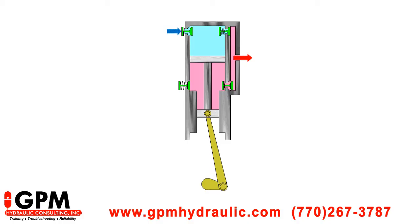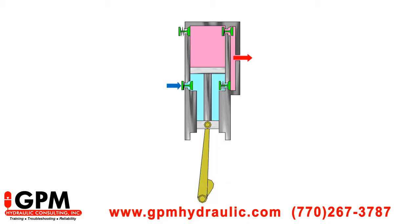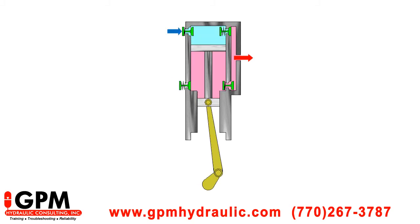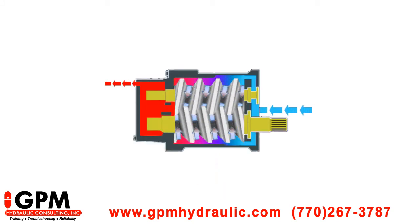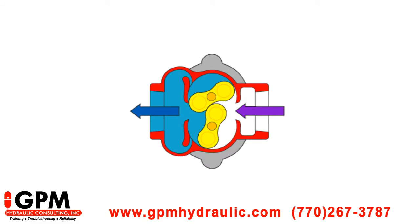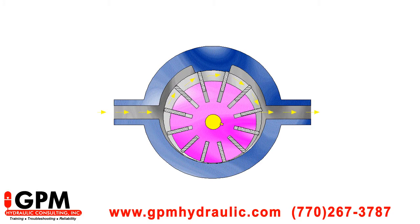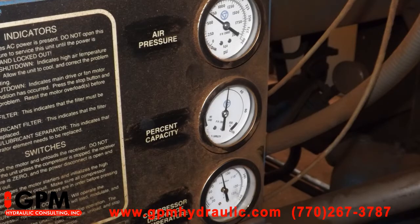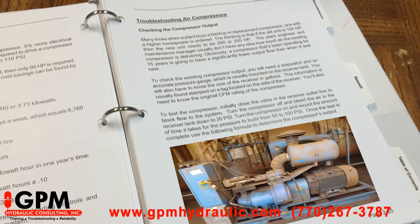Students are instructed in the five most common types of compressors used in industrial plants: piston, rotary screw, centrifugal, rotary lobe, and vane type compressors. In this workshop, we show how one simple adjustment can drastically reduce energy costs while maximizing the life of the compressor. We demonstrate the troubleshooting procedure to verify that the compressor is delivering its rated flow.